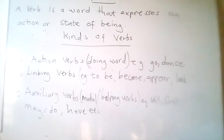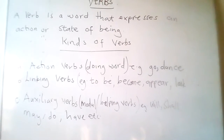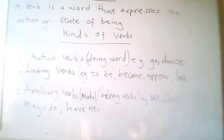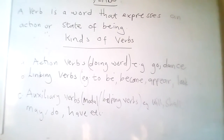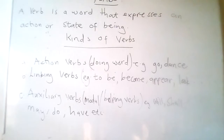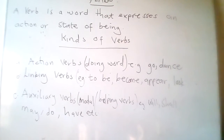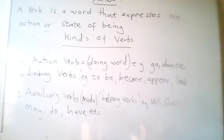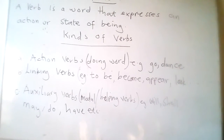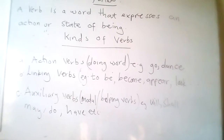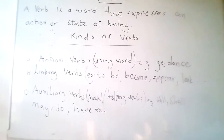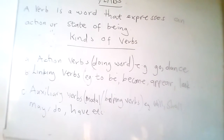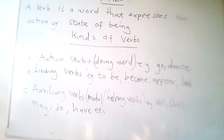Examples of auxiliary verbs include: will, shall, may, do, have, and so on. Note that sometimes it is acceptable for verbs to be classified into only two groups, where all linking verbs are considered as auxiliary verbs together with the modal auxiliaries. Now let's explain and give examples of action verbs, linking verbs, and auxiliary verbs.